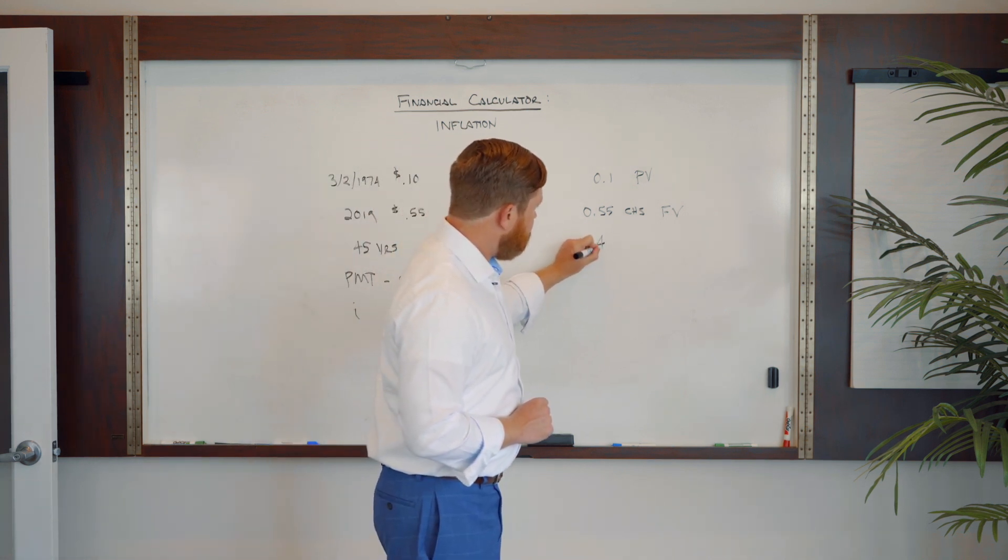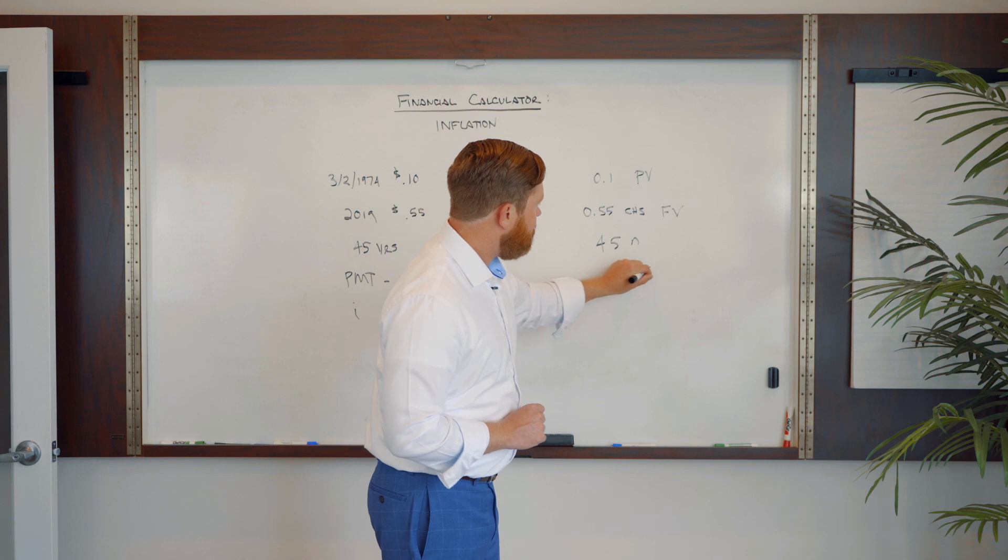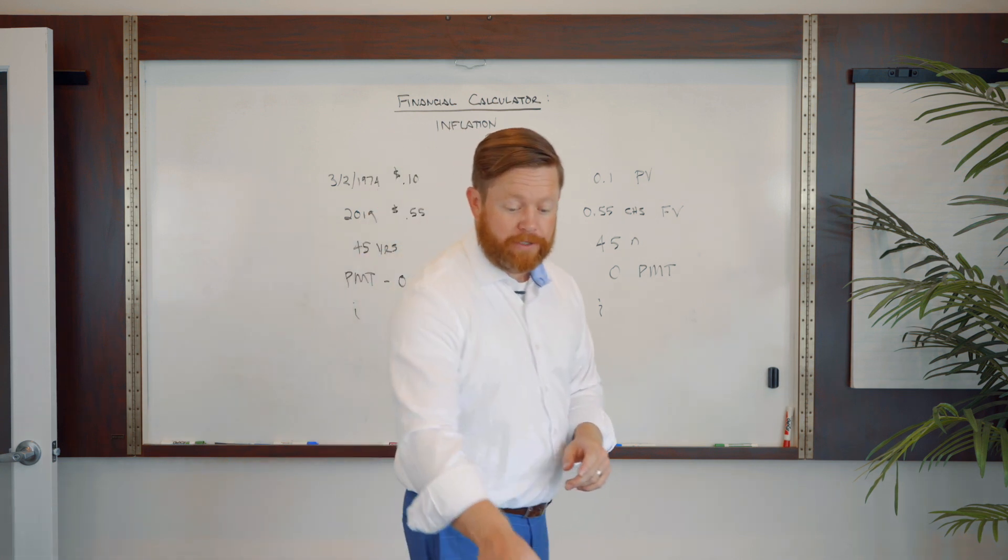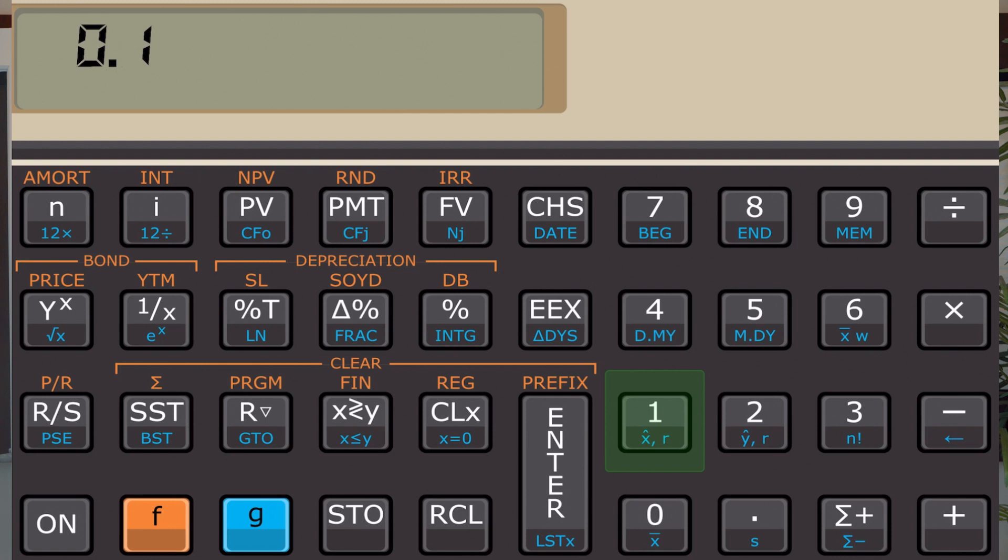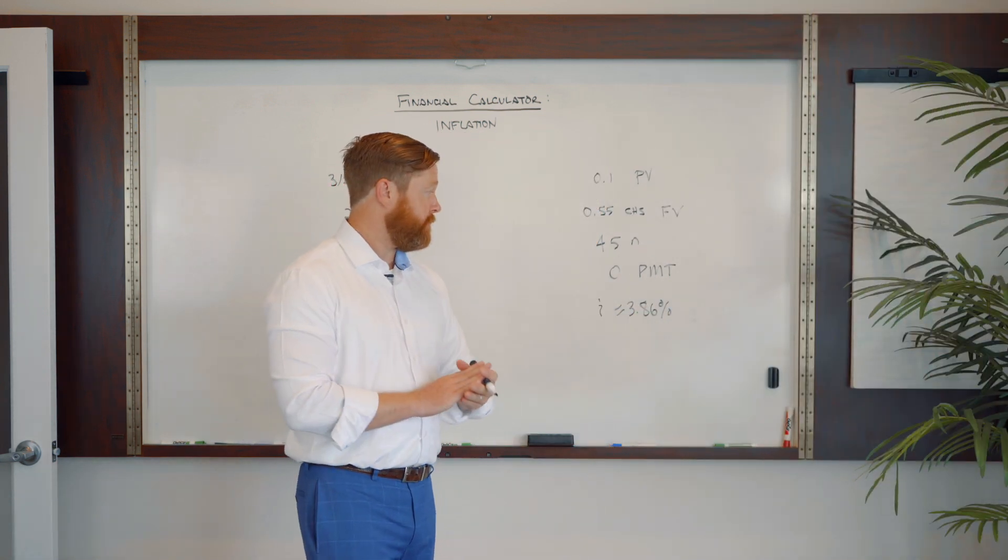45 is going to be our number of periods. So 45 in payment, we're going to hit zero and then PMT. And then we will just hit I to figure out what our actual interest rate is. So I'm going to do that here on our Apple phone with a free app that we're using that you can download. So we go 0.1 present value, 0.55 change sign future value, 45 in the number of periods, zero payment. And then what is our interest rate? And our interest rate here comes out to 3.86%.